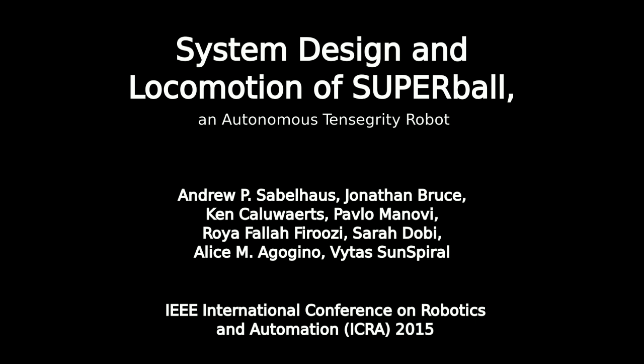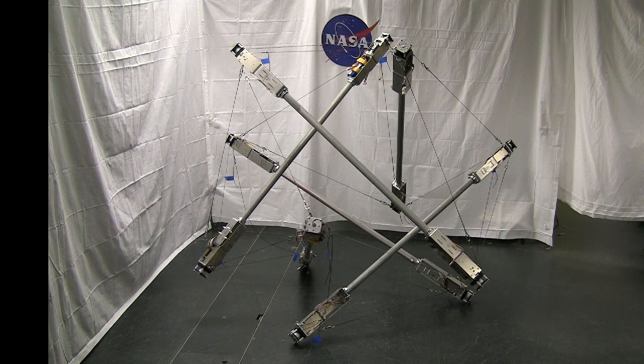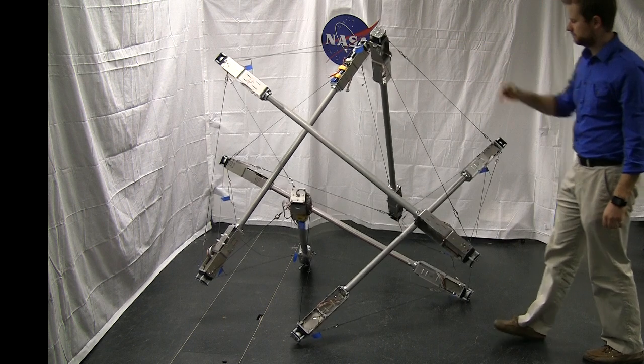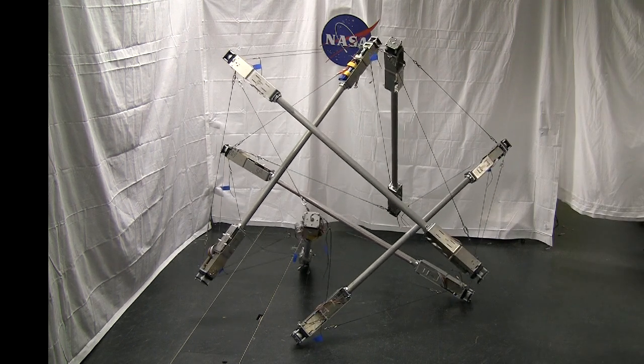The Spherical Underactuated Planetary Exploration Robot Ball, or Super Ball, is an autonomous tensegrity robot at NASA Ames Research Center that is designed for dynamic rolling locomotion. System-wide compliance makes such movement possible.